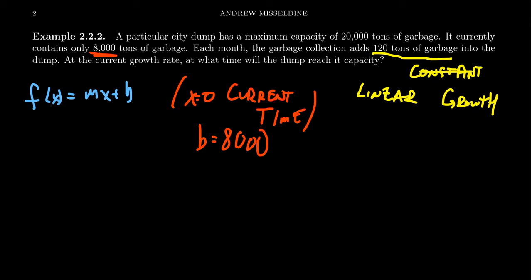X will be a measurement of time. And so we talk about months, and so we should be measuring x here as some time measurement in months. X will measure how many months have elapsed from the current moment. All right. So now we have the y-intercept.